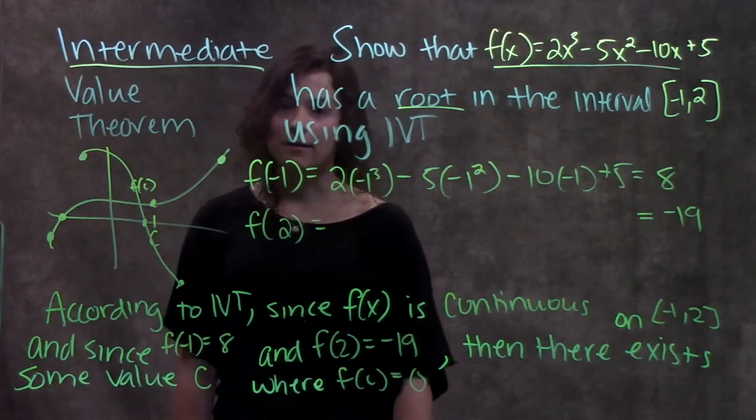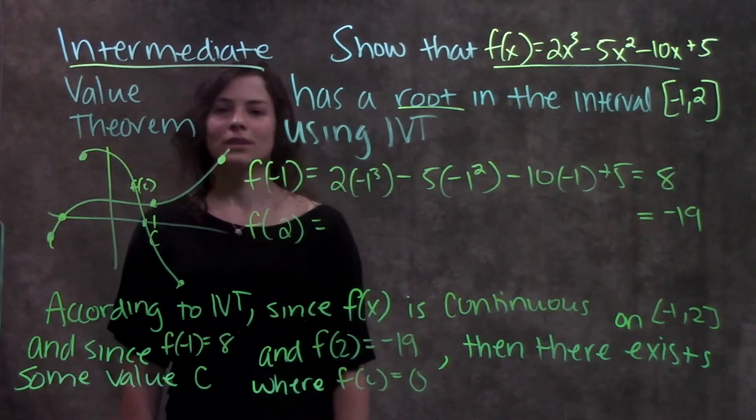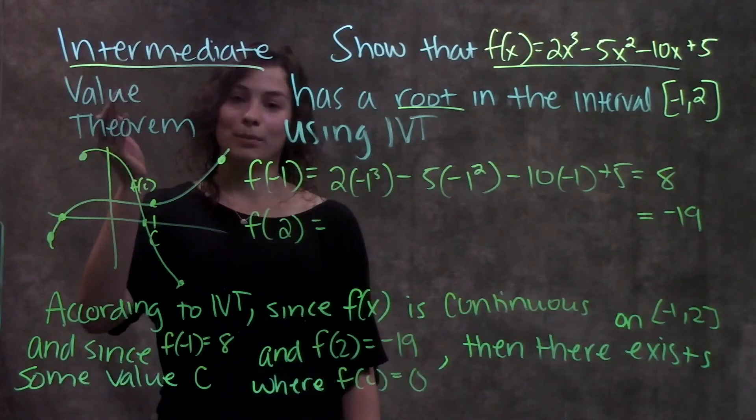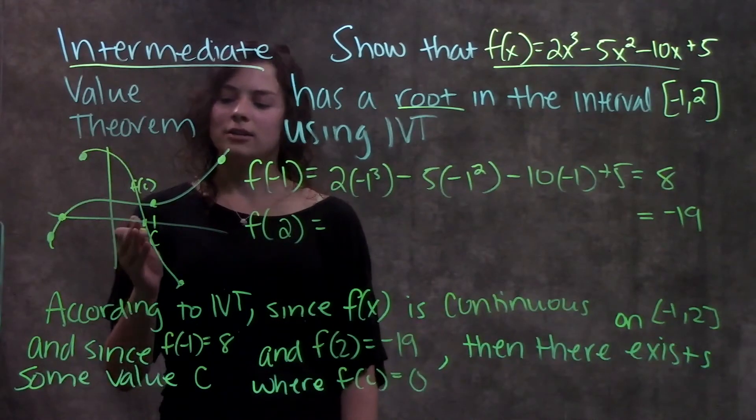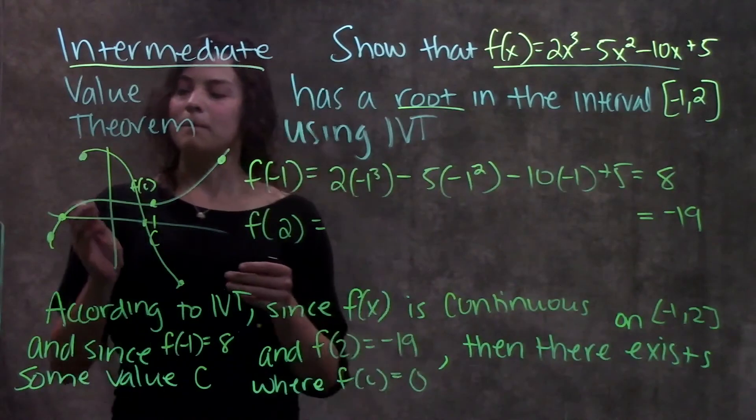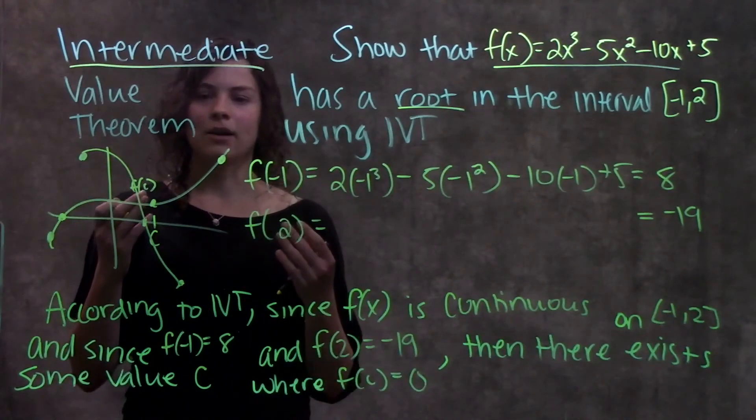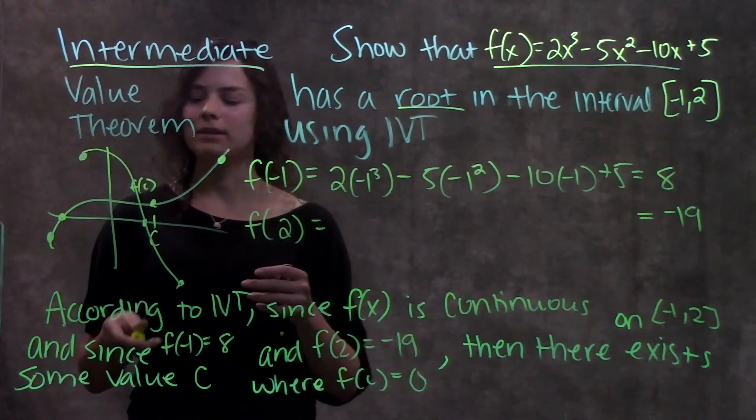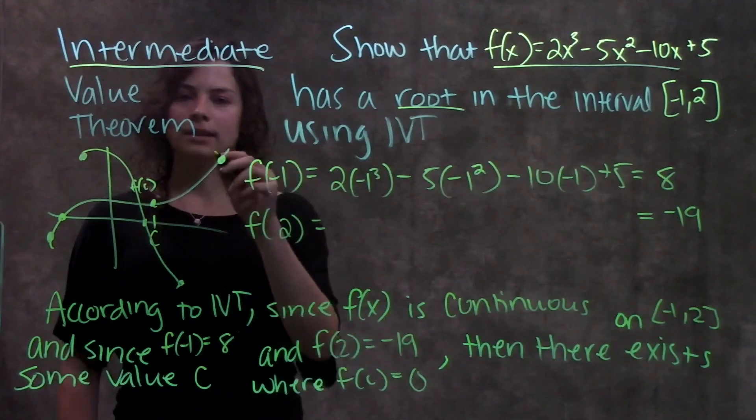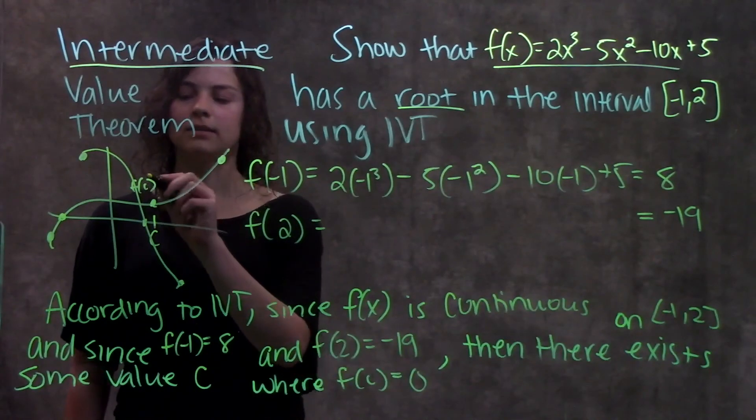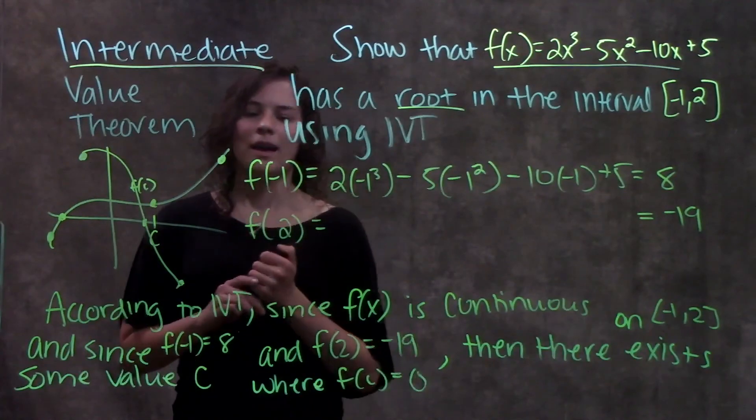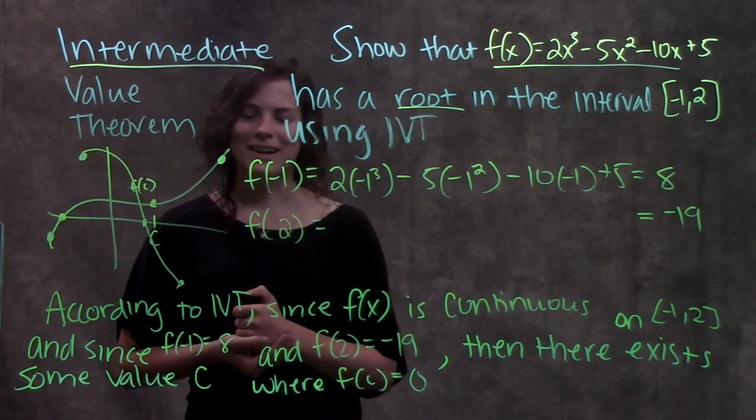And that's about it for Intermediate Value Theorem. So brief recap, Intermediate Value Theorem, it's worried about the number in the middle, and you can use this for questions other than ones that involve roots. You can use it in a lot of different scenarios, but basically all it says is that if this function is continuous, it goes from some value down here to some value up here, then there must exist some value in the middle at x equals c, such that f of c is in between those two y values. And yeah, that's about it. I hope this was helpful.